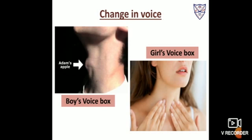Next is change in voice. Voice is produced by the larynx, or the voice box. At puberty, the voice box begins to grow, and boys will have a larger voice box compared to girls. The larynx protrudes outside in the neck, and that part of the throat is called Adam's apple. In girls, the voice box is hardly visible from outside because it is very small. So girls will have a high-pitched voice, whereas boys will have a low-pitched or deep voice.